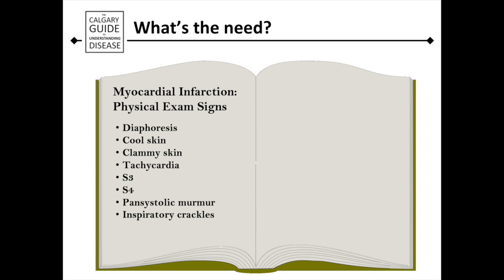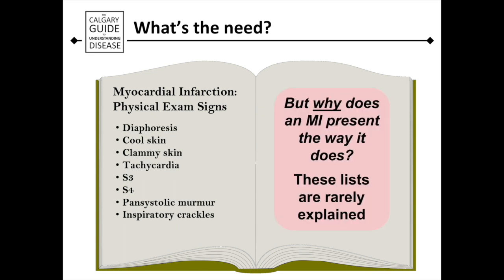So now that we've acknowledged the people, we really need to talk about why there was a need for the Calgary Guide in the first place. In most medical education lectures, you'll see a list almost every minute — for example, the physical exam signs of a myocardial infarction, otherwise known as a heart attack. You can see that there's a list of signs that the lecturer will usually present to you. The issue is: why does an MI present the way it does? The problem is that these lists are rarely, if ever, explained as well as they could be to the medical student level during a lecture.